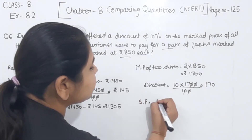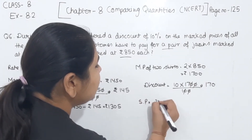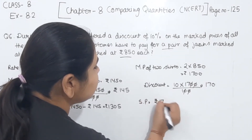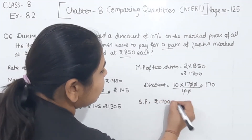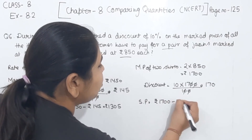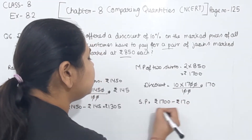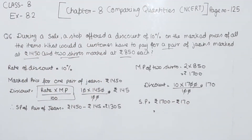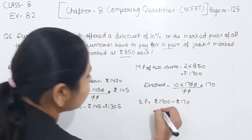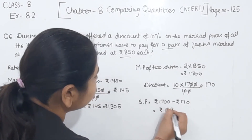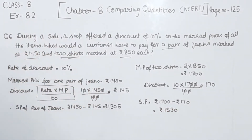Now we find the selling price of the 2 shirts. Selling price = ₹1700 − ₹170 = ₹1530.